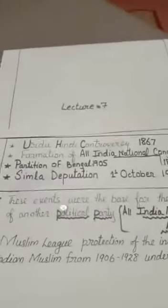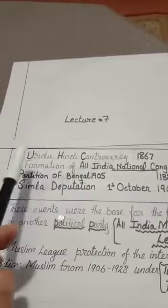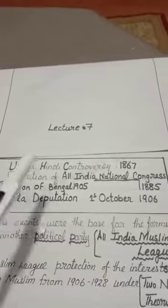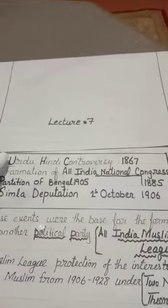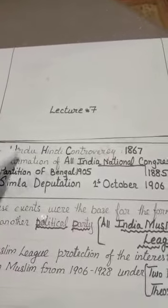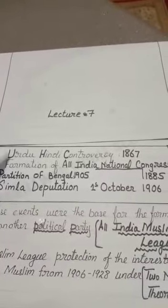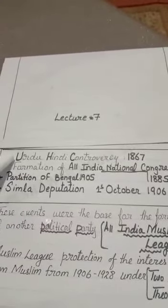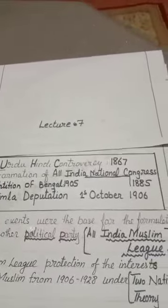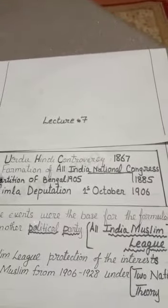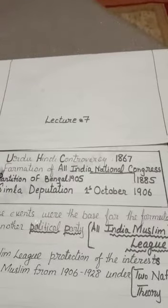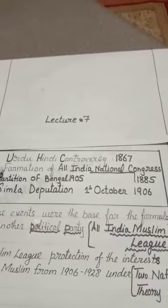The main points of lecture six: the evolution of the Two Nation Theory. Sir Syed Ahmad Khan was a great Muslim leader. Initially he was in favor of Hindu-Muslim unity, but later events changed his mind. These events were the Urdu-Hindi controversy in 1867, when Hindus of Banaras started a movement against Urdu, and the formation of the All India National Congress — the first political party in British India — which was dominated by Hindus and whose policies were against the Muslims.